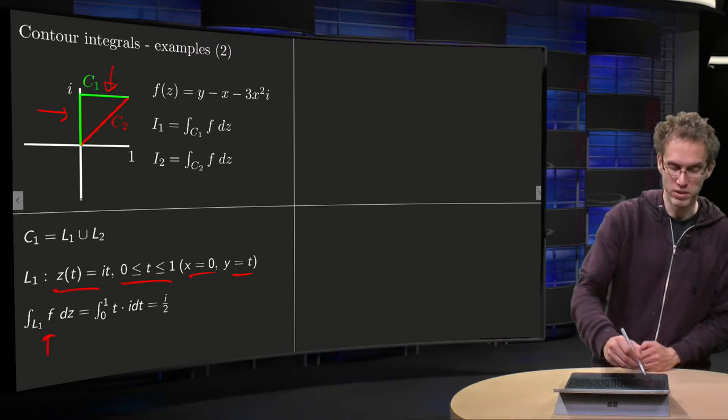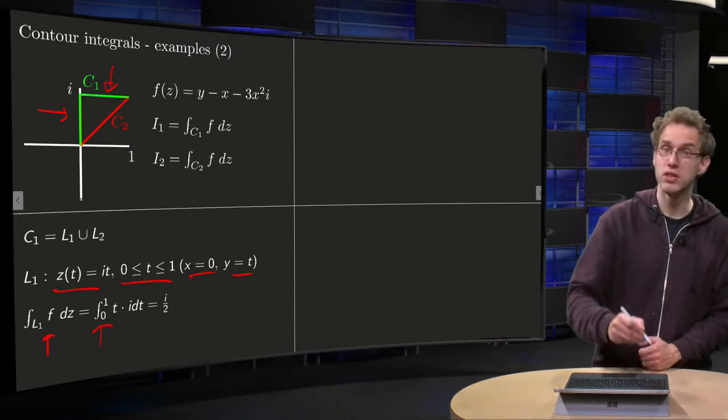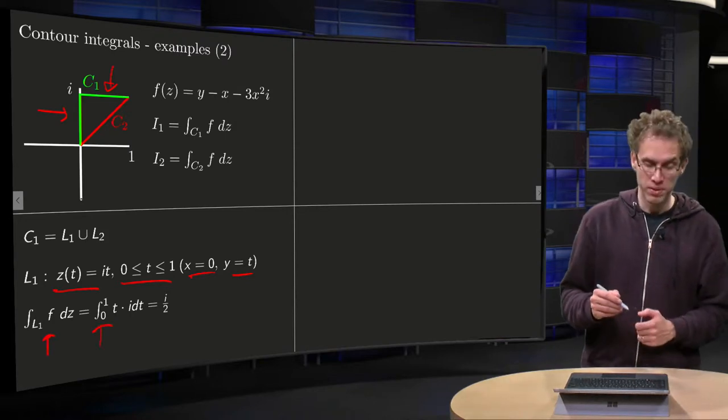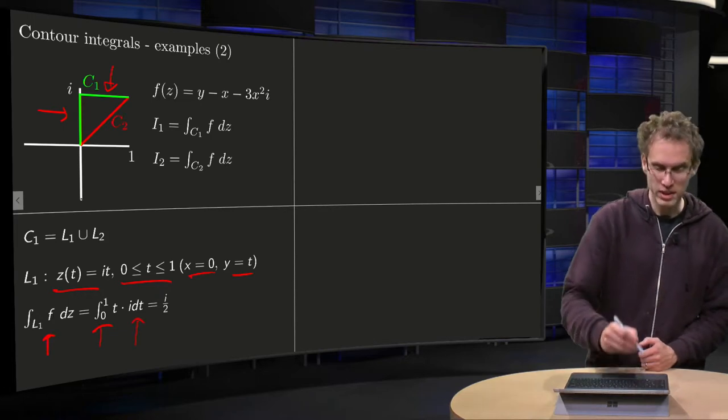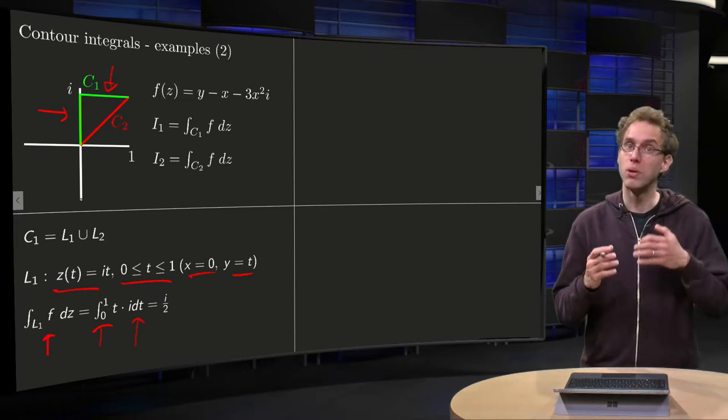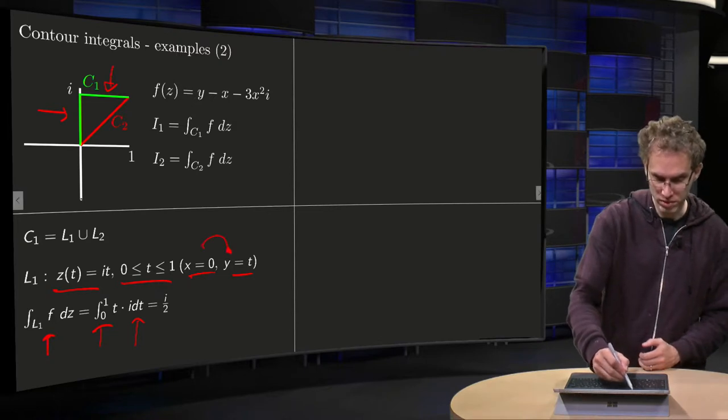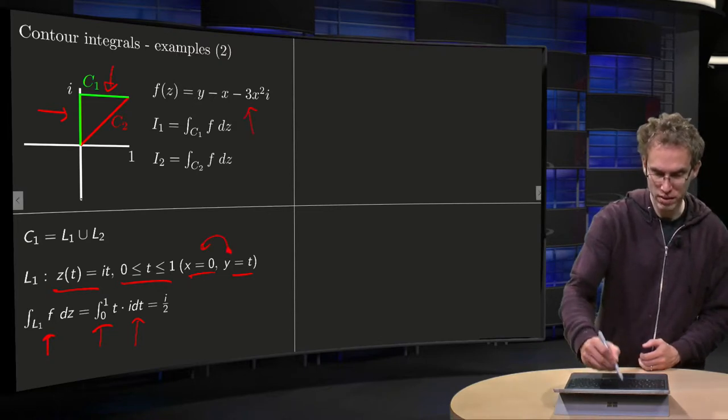Well, the integral along L1 f dz, boundaries of t 0 to 1, you get dz equals i times dt, and then you have to plug in x equals 0 and y equals t into your function f.